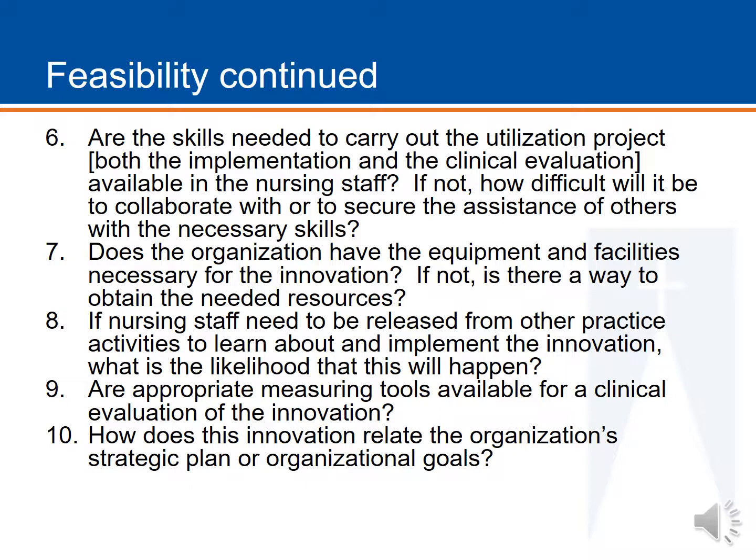The seventh question: does the organization have the equipment and facilities necessary for the innovation? This gets into cost components. For aromatherapy, you'd need to buy essential oils and some kind of diffuser — an individual diffuser, a necklace, or something similar. Those are costs associated with the project. Some projects have limited or almost no costs, but you need to consider this because cost is always a potential barrier.